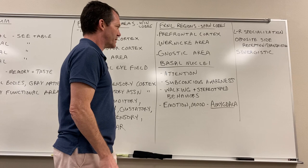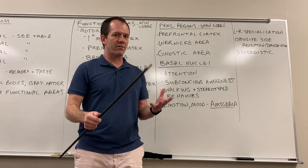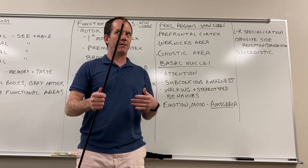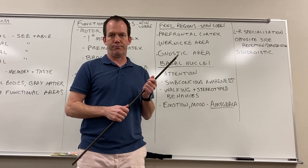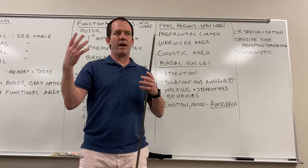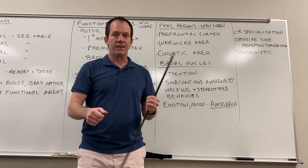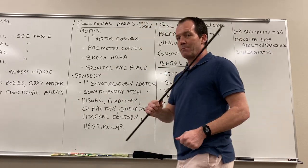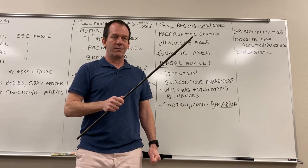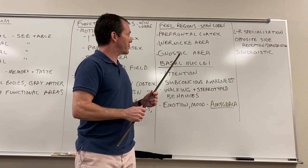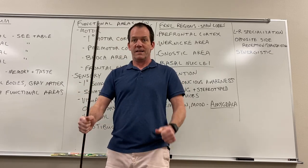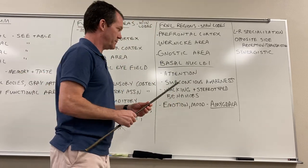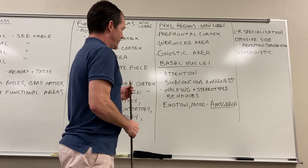The Gnostic area — gnostic means knowledge — is your awareness region. Almost subconsciously, I'm aware that I'm standing in this room holding a stick talking to a telephone. It gives you behavioral self-awareness. If I'm riding a bike, I use my pre-motor cortex to stay on the bike, my Gnostic area to be aware I'm on the bike, and my primary motor cortex to go faster or put on the brakes. Brains are complicated.